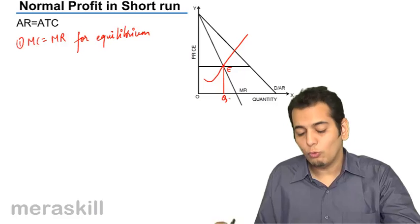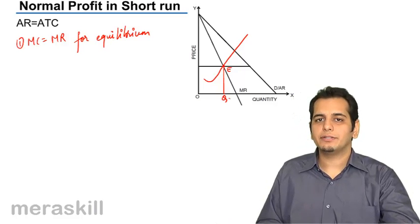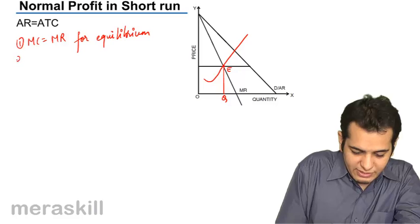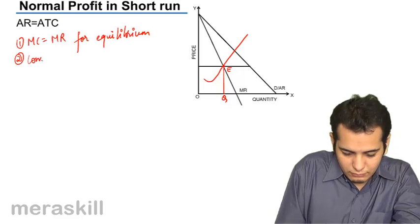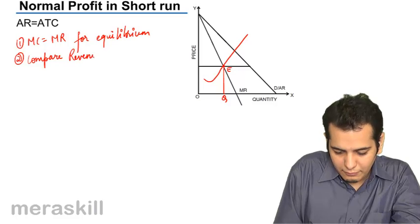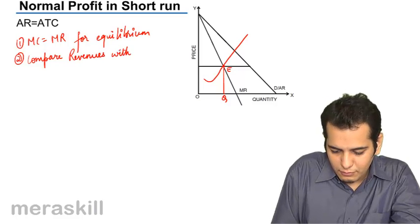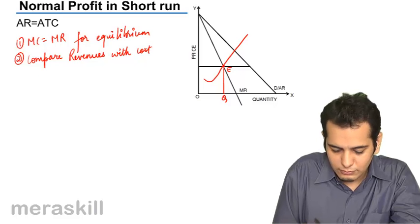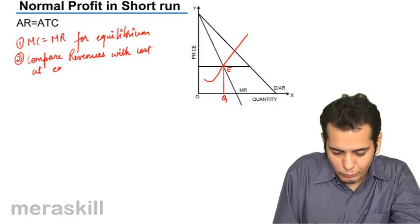So, OQ becomes my equilibrium quantity. Now, the second step is compare revenues with cost at equilibrium.